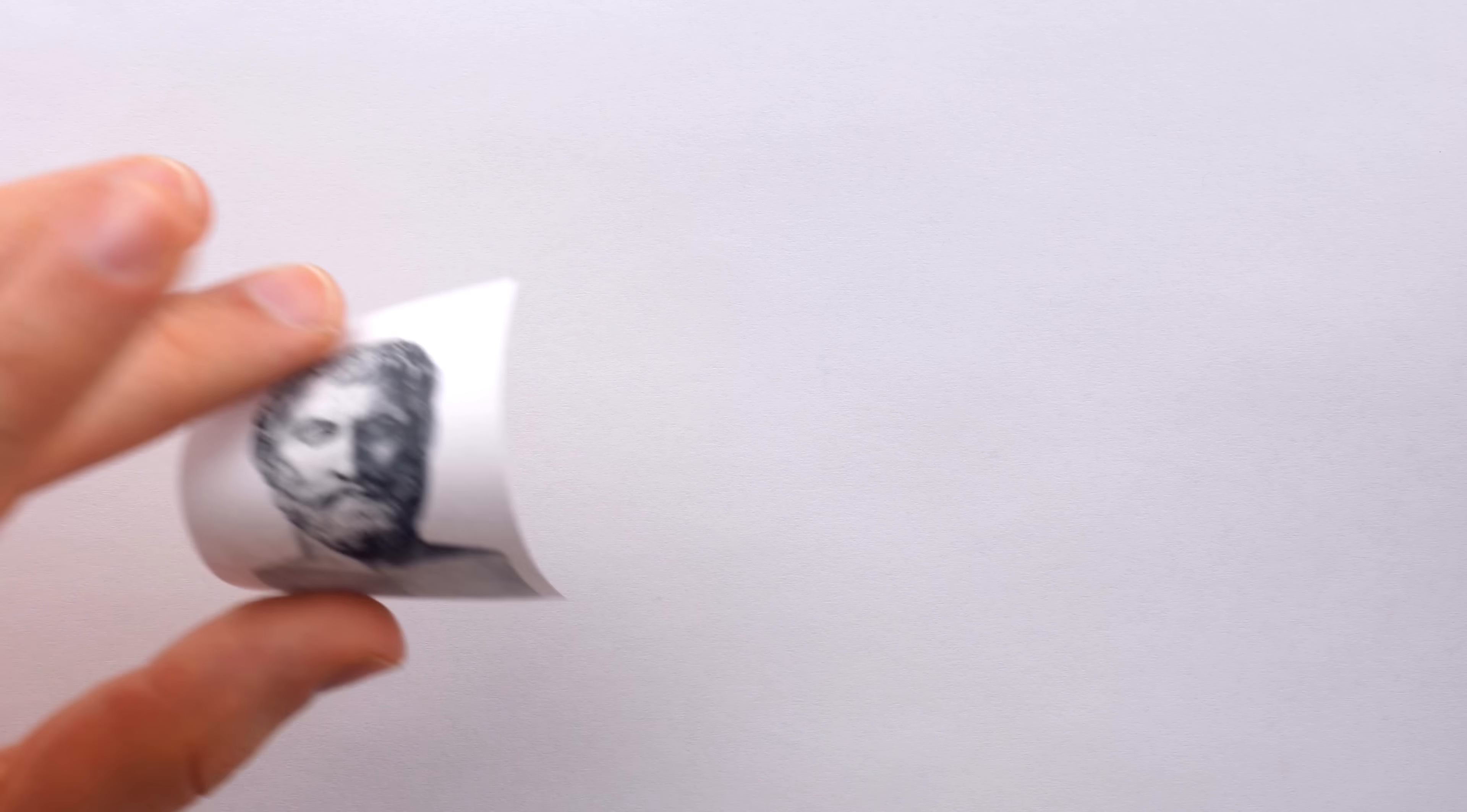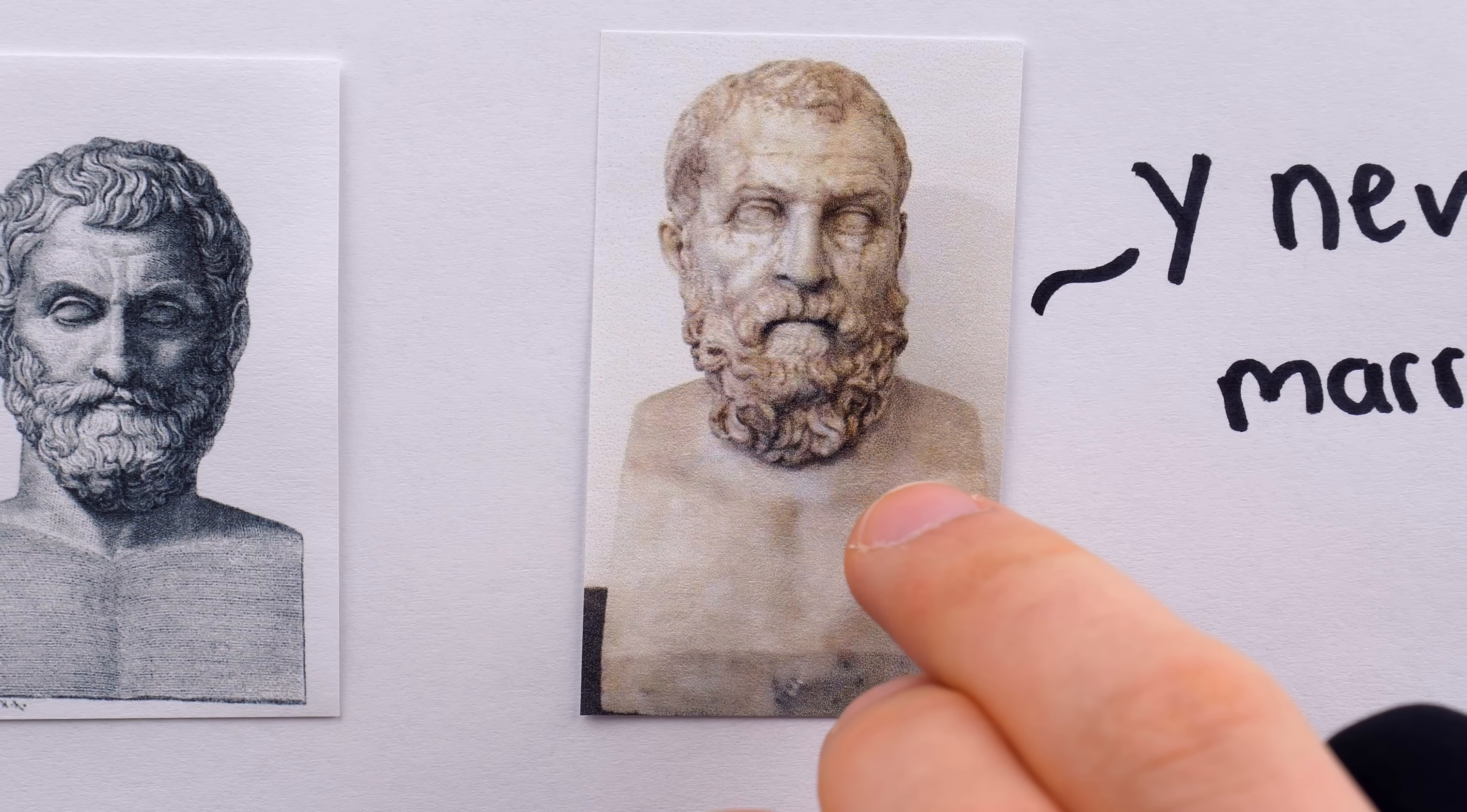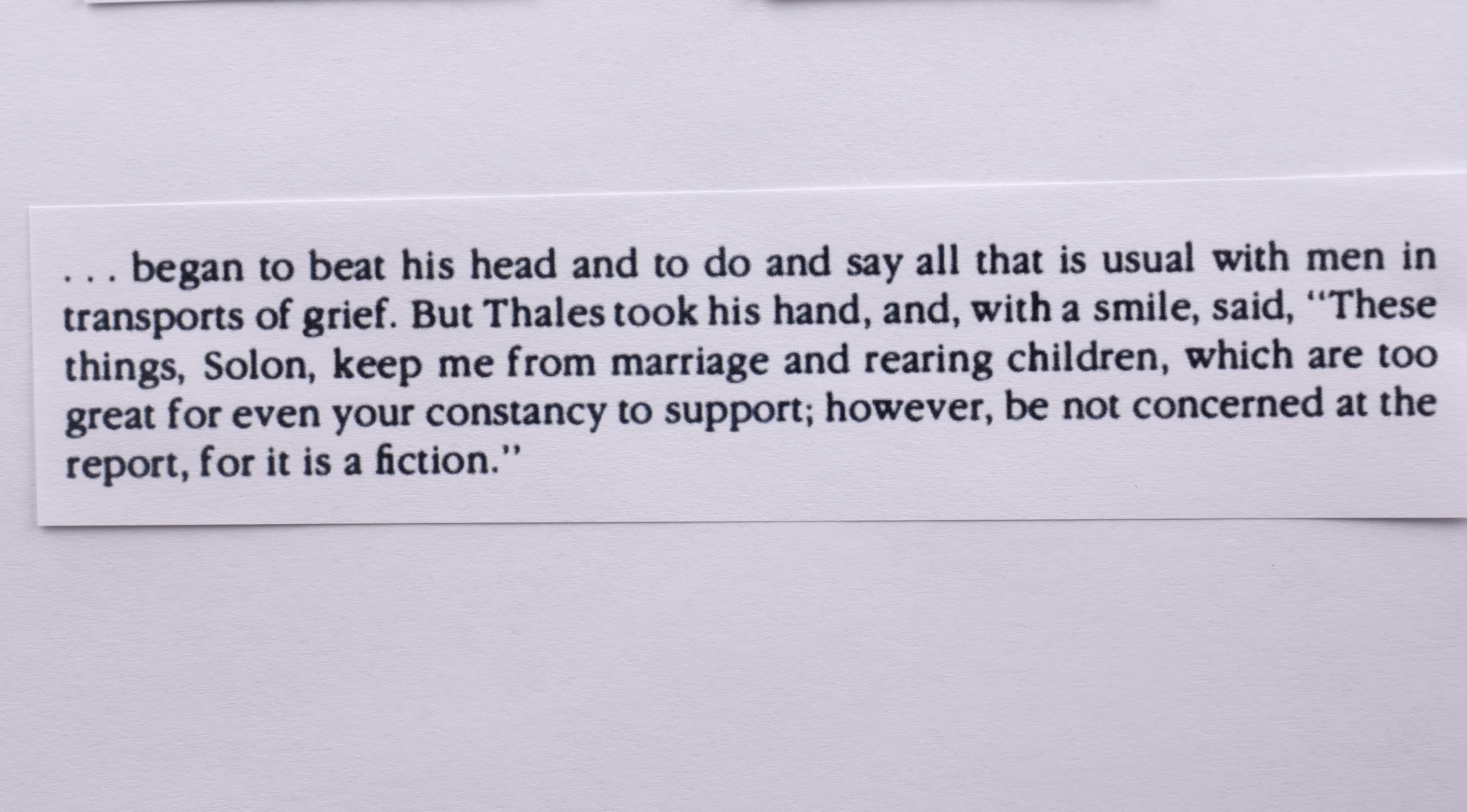Another cruel story of Thales concerns him and his contemporary Solon of Athens. It is said Solon asked Thales why he never married. To answer his question, Thales arranged for a messenger to deliver Solon news of the death of his son. According to the ancient biographer Plutarch, upon receiving this news, Solon began to beat his head and to do and say all that is usual with men in transports of grief. But Thales took his hand and, with a smile, said,